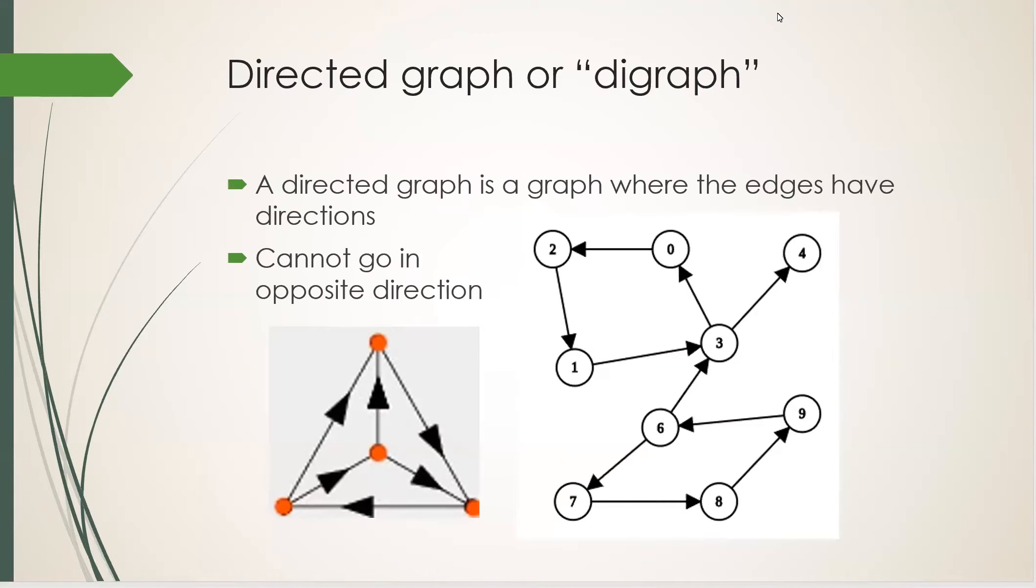Some graphs have edges that can only be traveled one way. That's called a directed graph. A directed graph or digraph is a graph where the edges have different directions and you can only go along that direction. You cannot go in the opposite direction. It's like a graph of one-way streets.